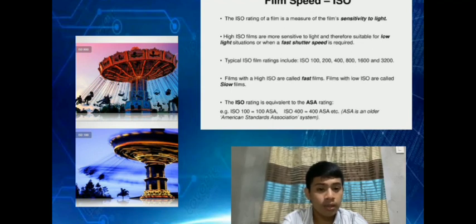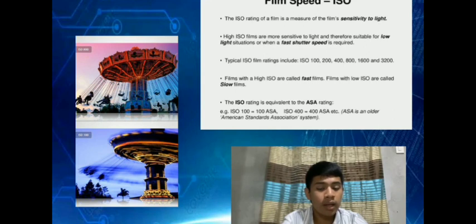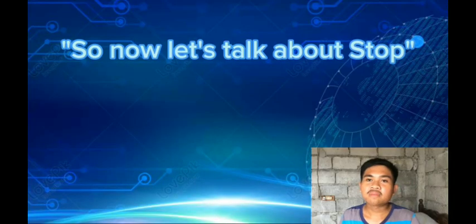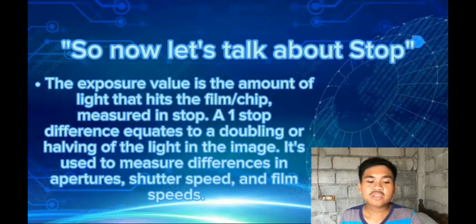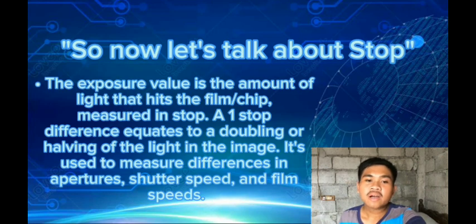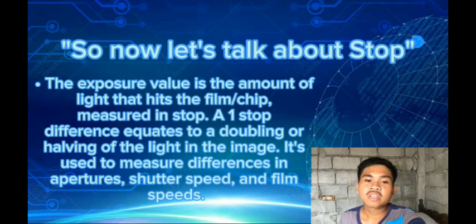Now let's talk about stops. The exposure value is the amount of light that hits the film or sensor, measured in stops. A one-stop difference equates to the doubling or halving of light in the image. Stops are used to measure differences in aperture, shutter speed, and film speed.